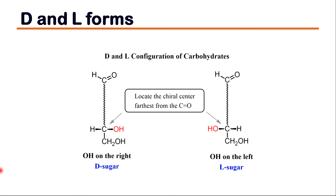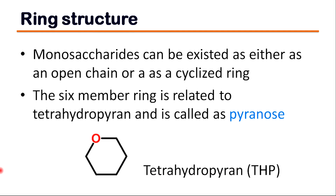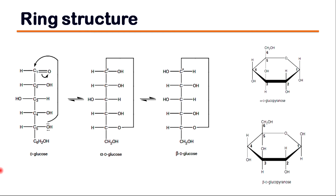In monosaccharides, the physical structure can exist either as an open chain or a cyclic ring. The six-membered ring is related to tetrahydropyran and is called pyranose. Tetrahydropyran is the organic compound consisting of a saturated six-membered ring containing five carbon atoms and one oxygen atom. The ring structure is more energetically stable and is more commonly seen in the case of glucose, fructose, and ribose. There are two possible ring formations for these sugars, known as pyranose and furanose.